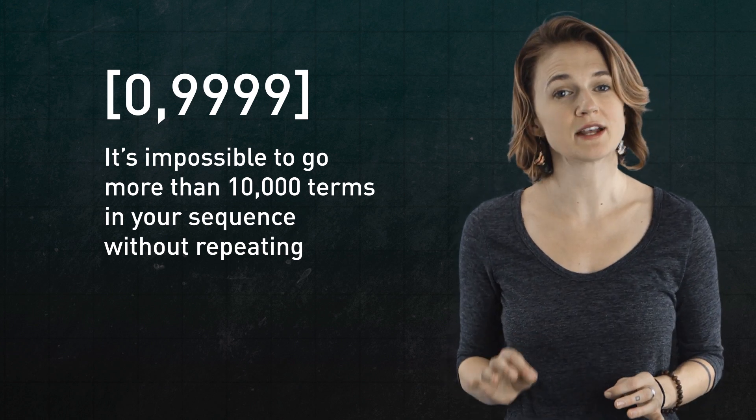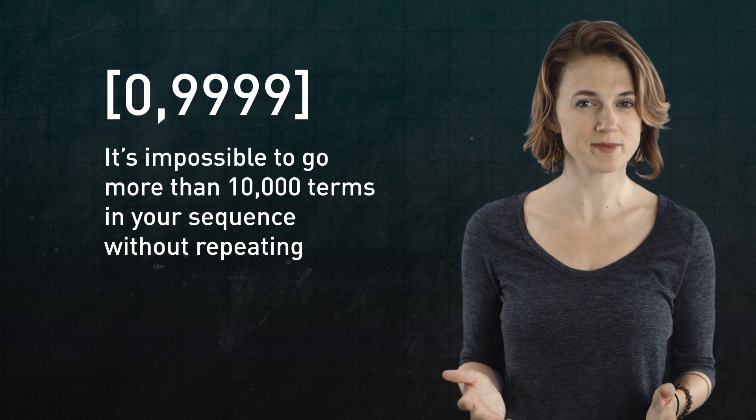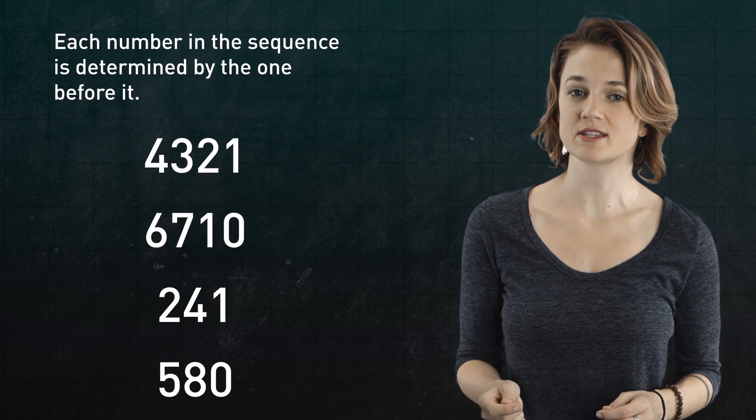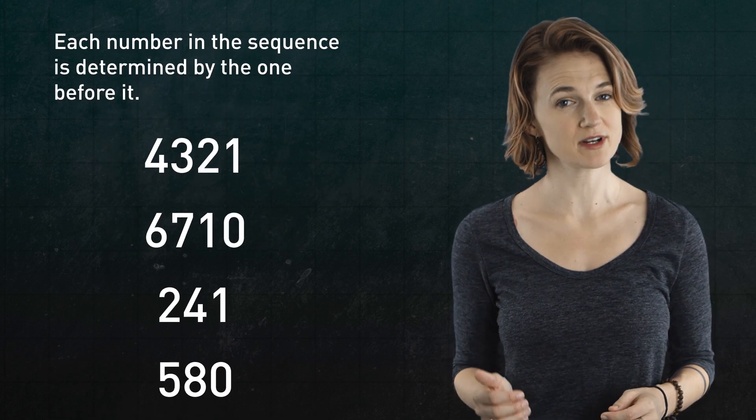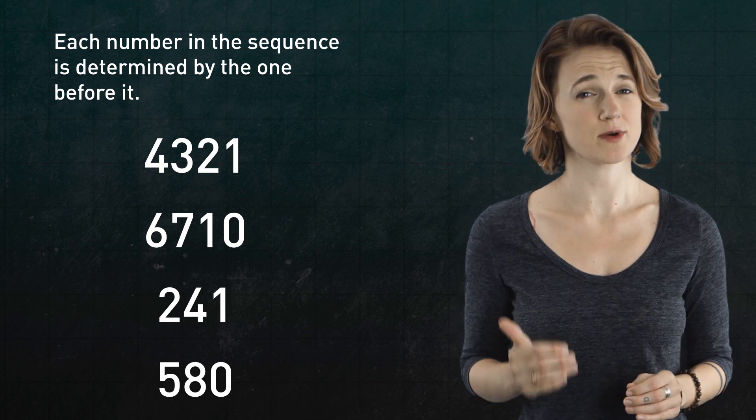That's because pseudorandom number generators follow a rule, essentially a formula, by which each number in the sequence is determined from the previous number.